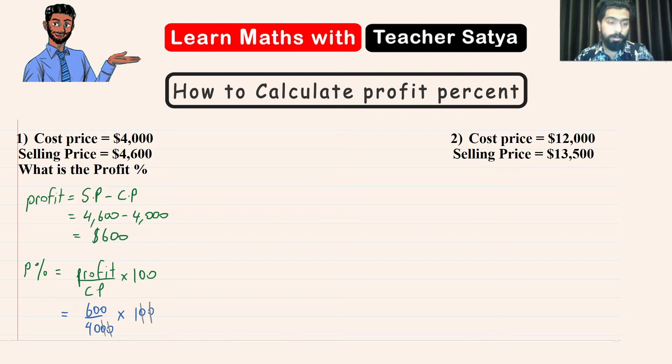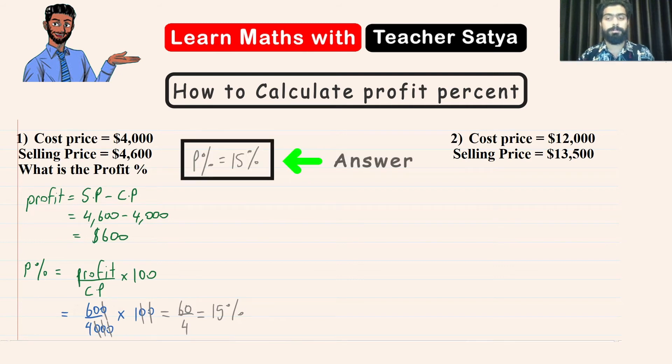Now I am going to also cut this zero with this zero. Now what I have remaining is equal to 60 over 4 which is equal to 15 percent. Therefore the P percent for question 1 is equal to 15 percent.